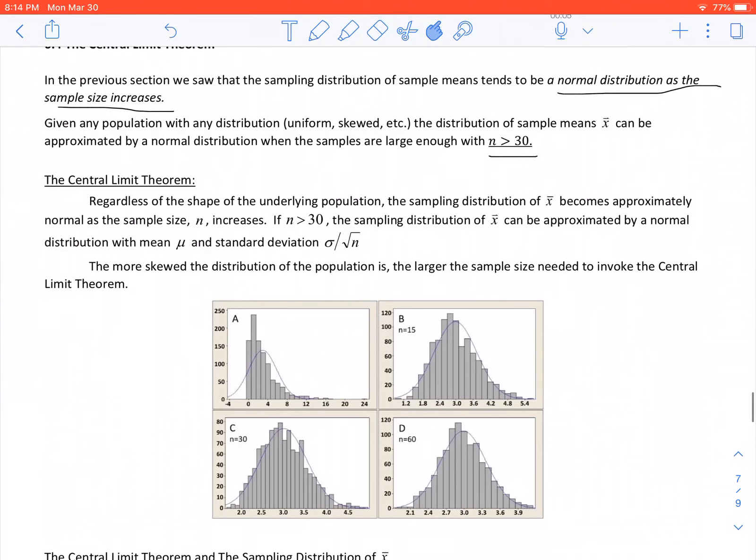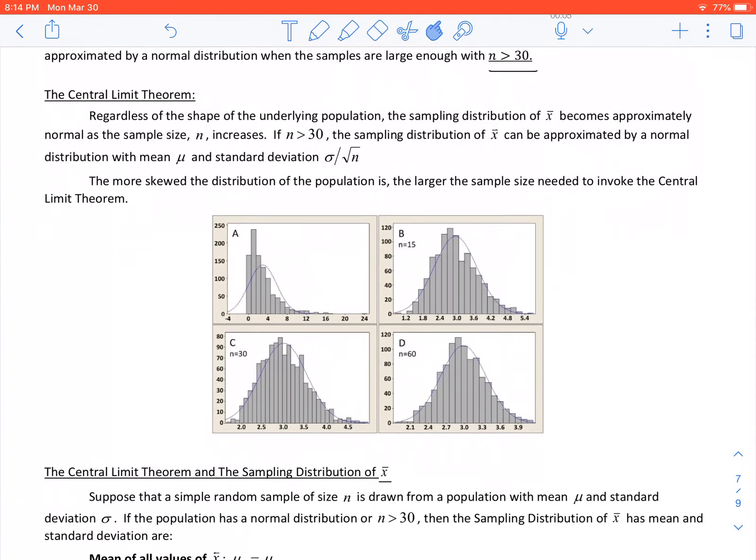The central limit theorem says pretty much no matter what is going on with our distribution, the more data that we collect, the more our graph is going to become looking normal. You can look at the four graphs there: A, B, C, and D. In B, the sample size is 15; in C, the sample size is 30; and in D, the sample size is 60. As they're collecting more information, you'll notice that histogram is starting to look more like that normal bell-shaped curve that's sketched on there also.